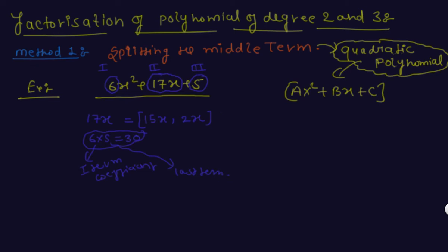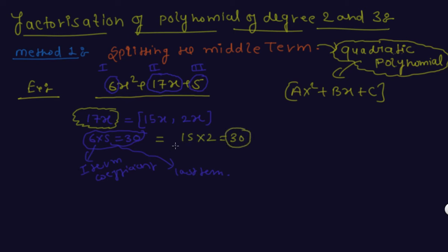Those two numbers are selected which can be added to get the middle term, and by multiplying give a result equal to the multiplication of first term coefficient and last term. 15 × 2 = 30, which equals 6 × 5 = 30. So my selection of 15 and 2 is correct.